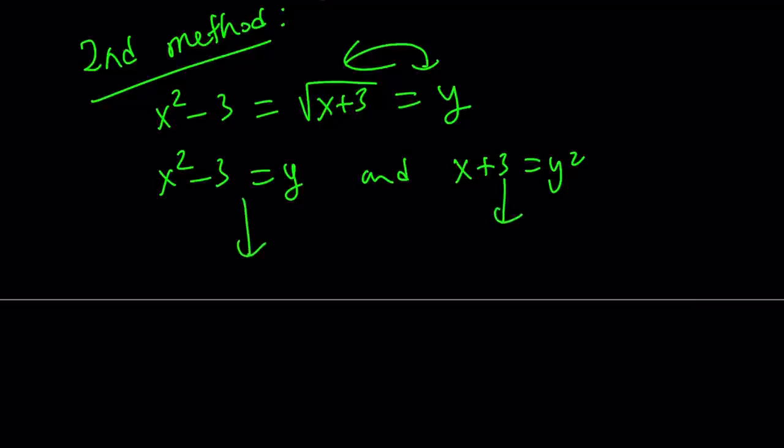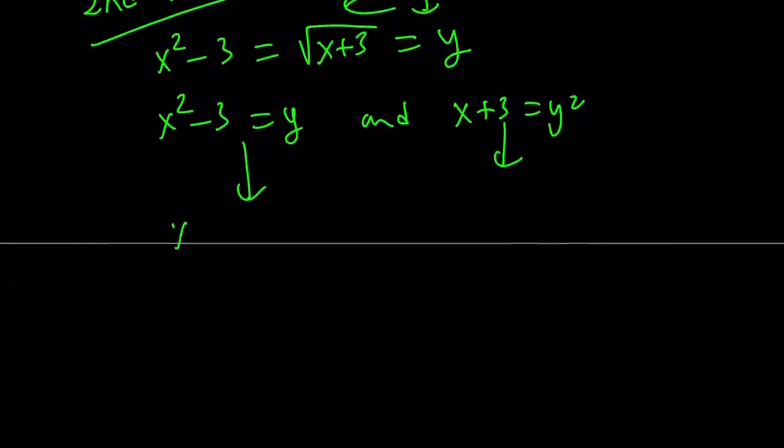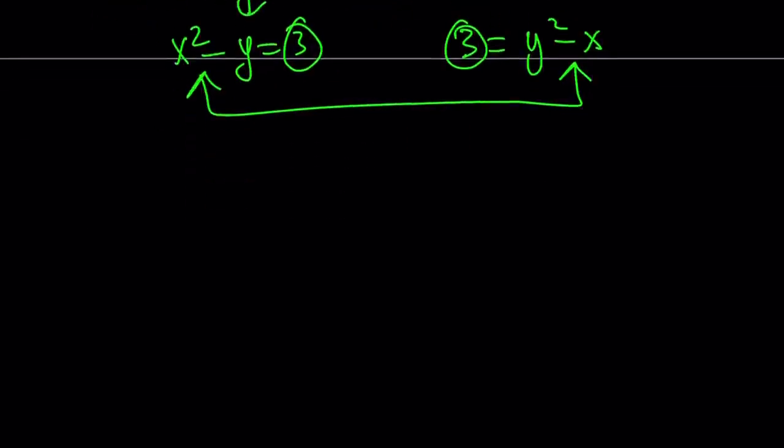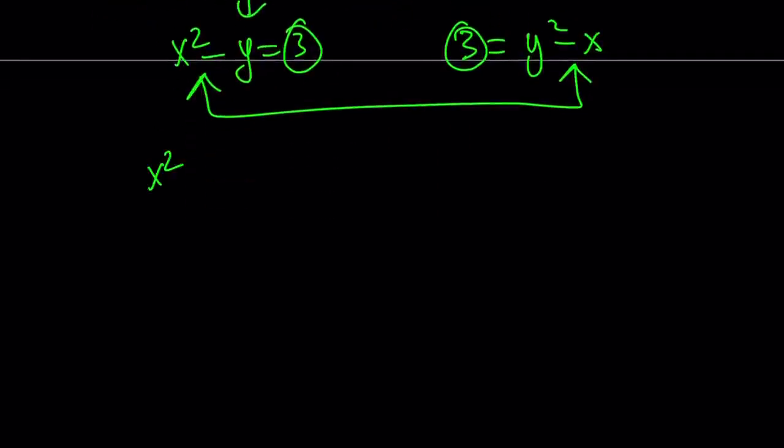I can basically isolate the 3 from both of these equations. So the first one gives me x squared minus y equals 3 if you just switch them around. And the second one gives me 3 equals y squared minus x. Since they're both equal to 3, then these two things are equal. I know I kind of made it a little confusing. Maybe you could also isolate the x in the second one and subtract these equations. Same thing. But I'm going to set them equal to each other, which is kind of more fun.